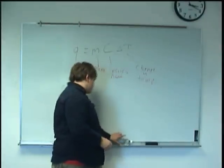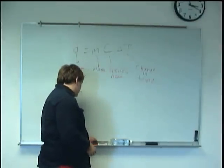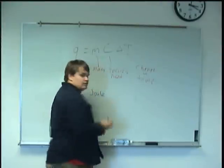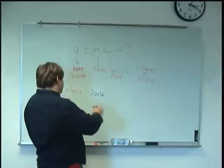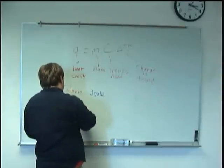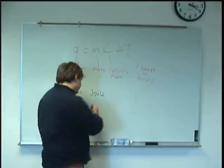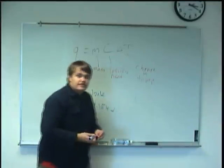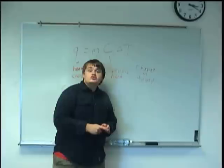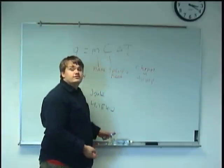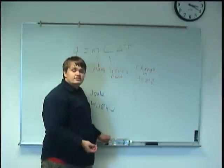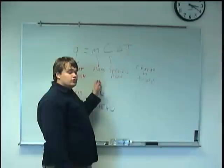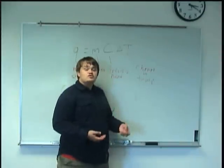Then there's also another unit of energy called the joule. And the approximate conversion is that one calorie equals 4.134 joules. Now you don't need to worry too much about what a joule means. Just know that it's an alternative unit of energy that is used. Then mass is of course self-explanatory. That's the mass of the substance you have.